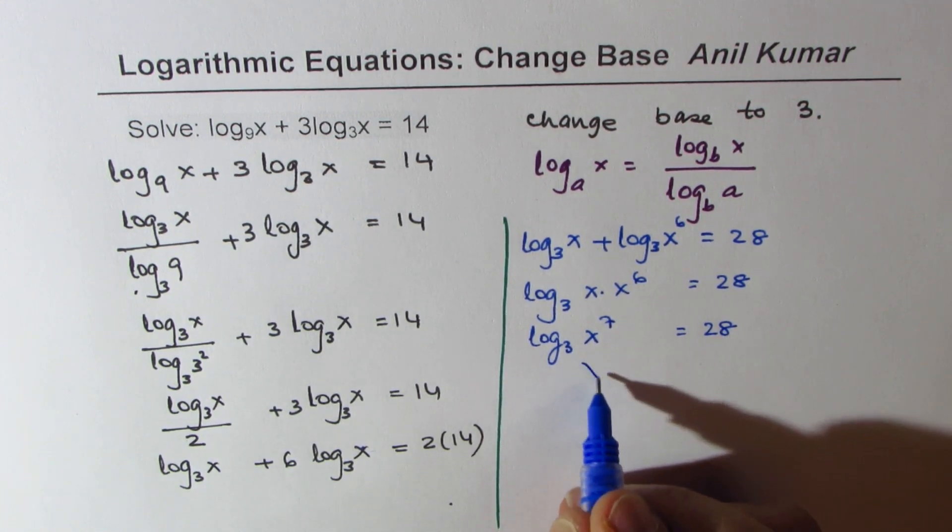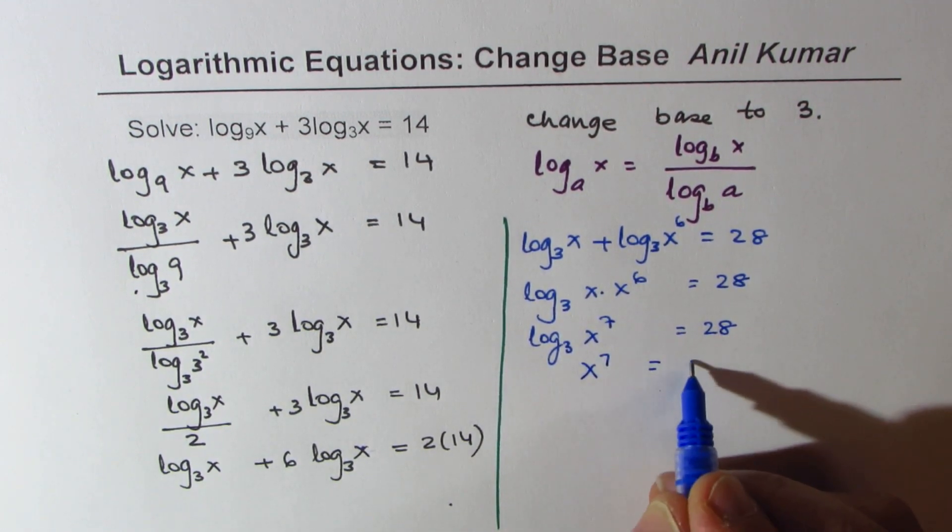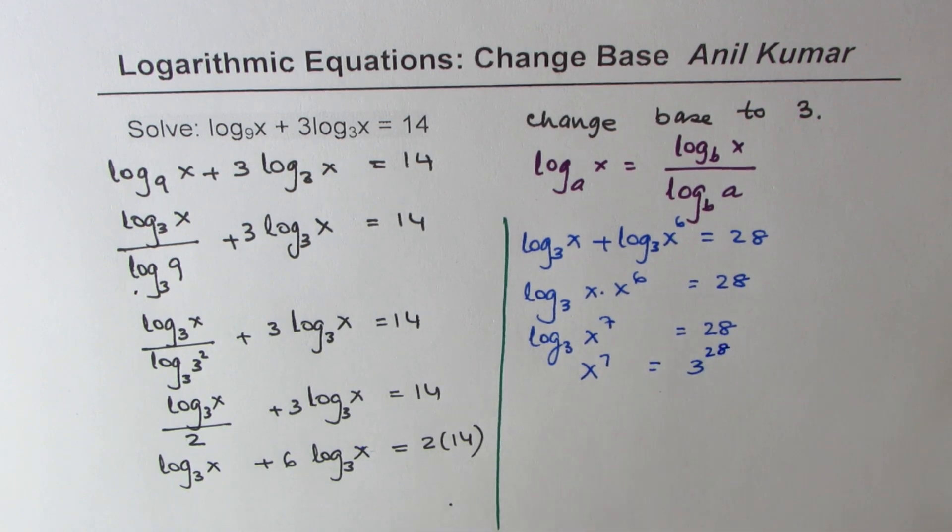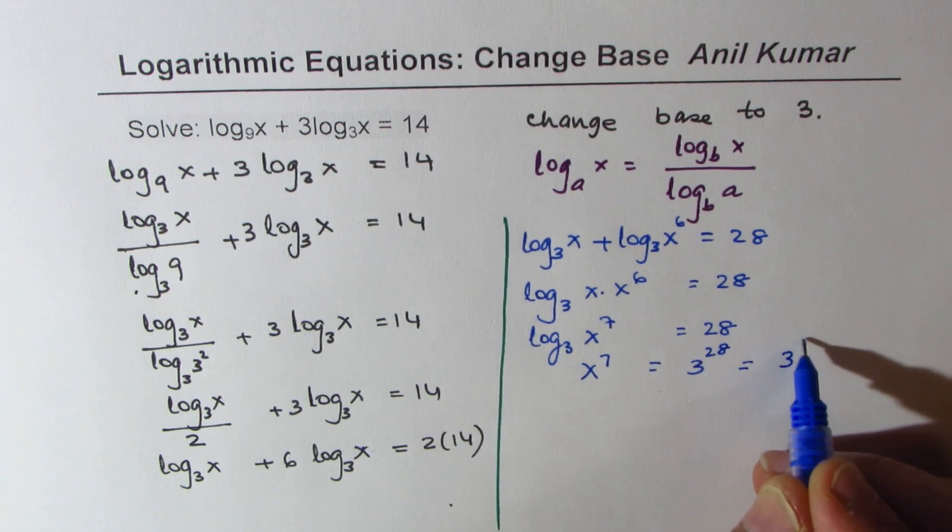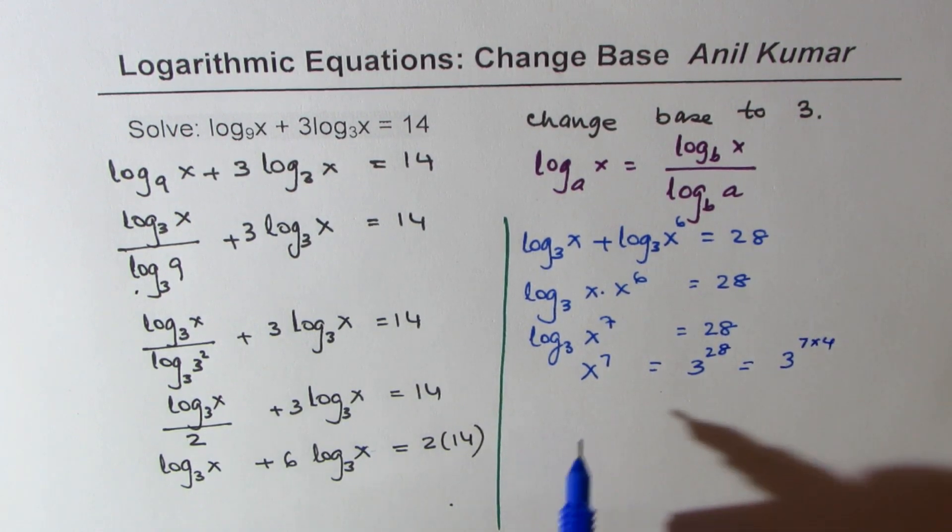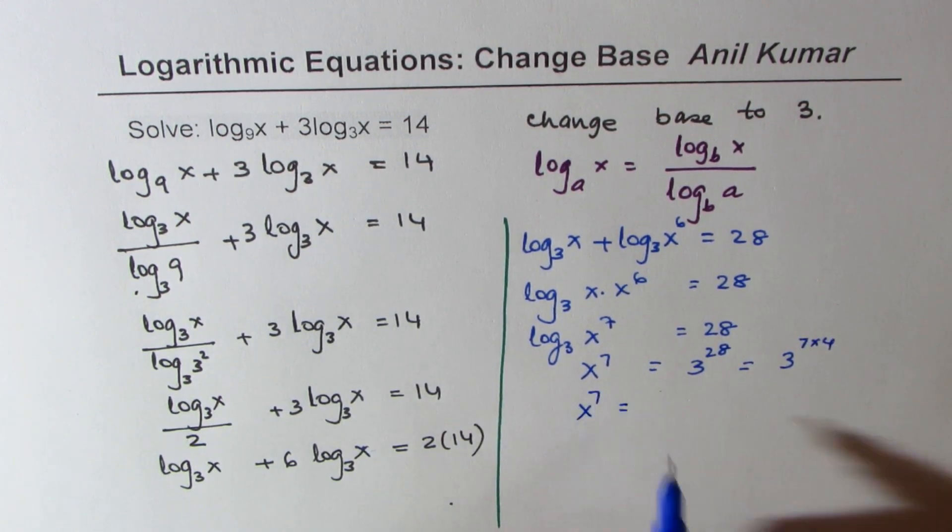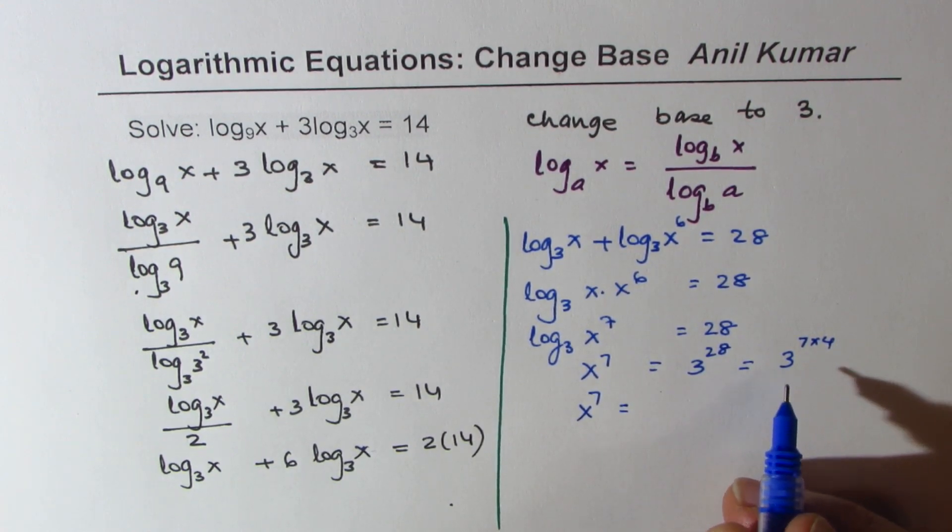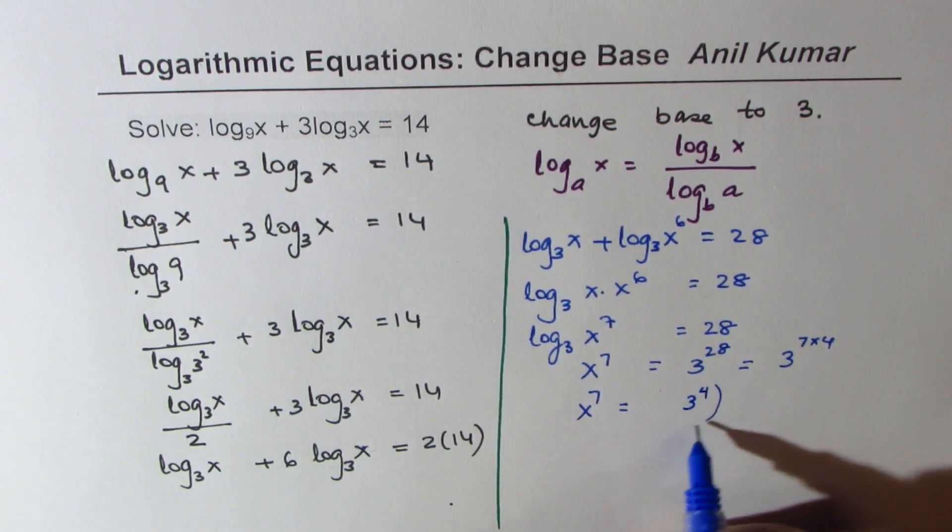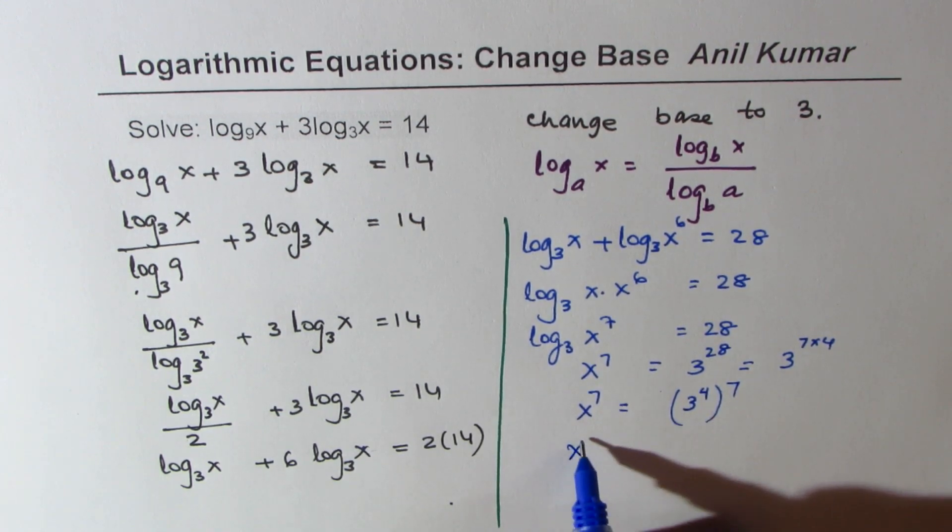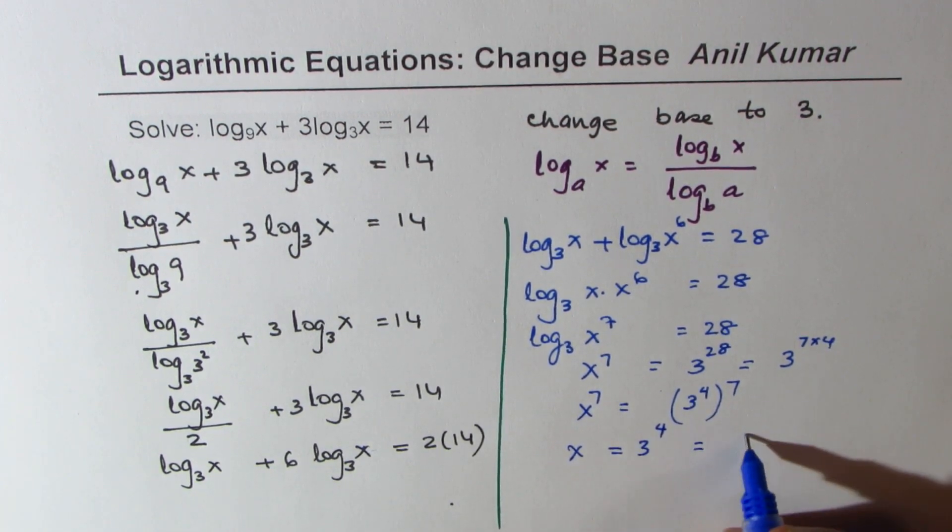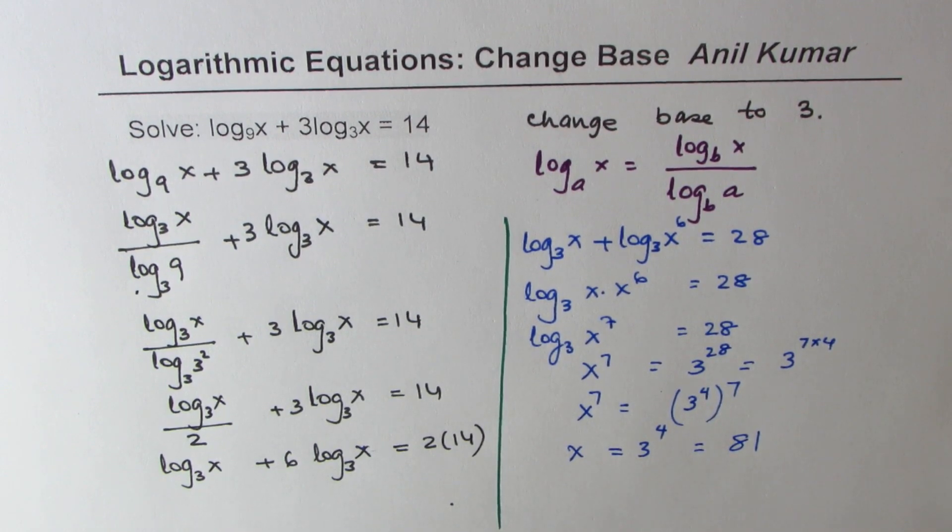Writing it in exponential form, we get x to the power of 7 as 3 to the power of 28. Now 28 could be written as 7 times 4, so we could write the right-hand side as 3 to the power of 4 to the power of 7. Comparing, we get our answer as x equals 3 to the power of 4, which is 81.